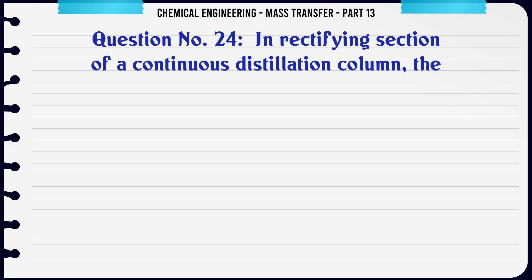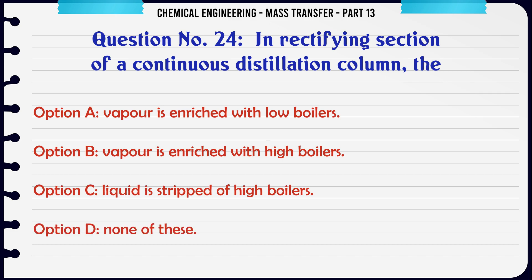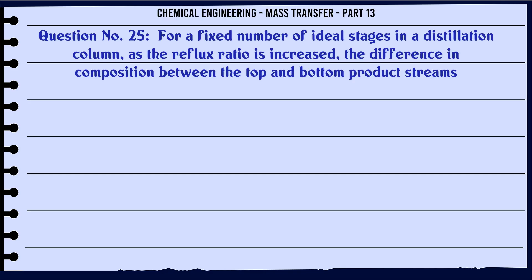In the rectifying section of a continuous distillation column, the: A. Vapor is enriched with low boilers. B. Vapor is enriched with high boilers. C. Liquid is stripped of high boilers. D. None of these. The correct answer is: Vapor is enriched with high boilers.